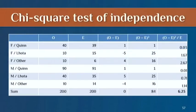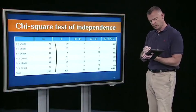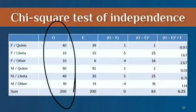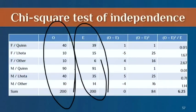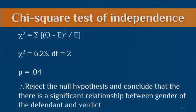Now I'm ready to do the calculations just like we did in the last segment for goodness of fit. I've lined up all my observed frequencies, then all my expected frequencies, get the difference, square each difference score, and sum all those squared difference scores — that's my chi-square value. In this example, the chi-square value is 6.23 with 2 degrees of freedom, and the p-value associated with that is .04.